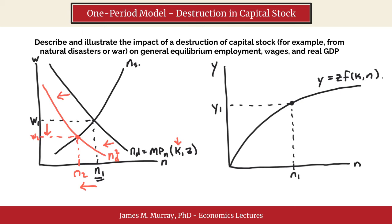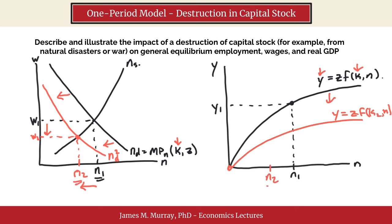Over here on the production function, we also have a downward shift. Because there's a decrease in capital stock, there's going to be a decrease in the level of output that is able to be produced. We'll have a new production function that looks something like this, K2, N. Now let's take our equilibrium N2, put it back on this graph on the production function, and go up to the new production function. Here we have Y2, and we can see there's a decrease in Y, or a decrease in real GDP.